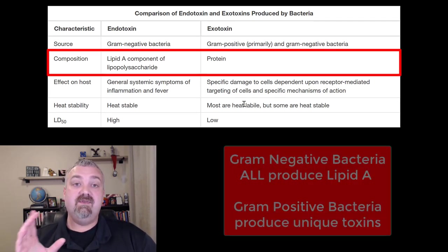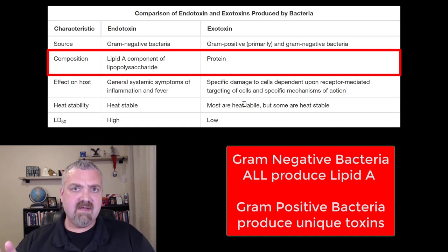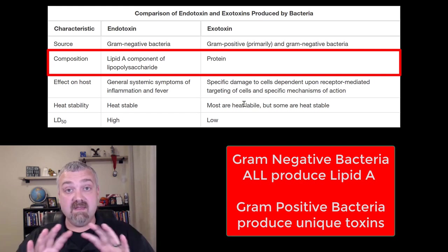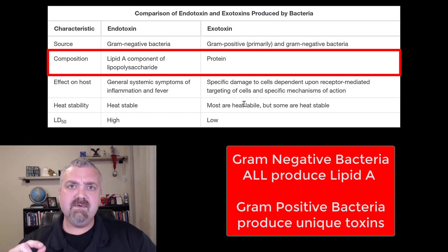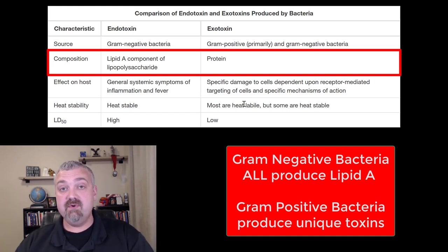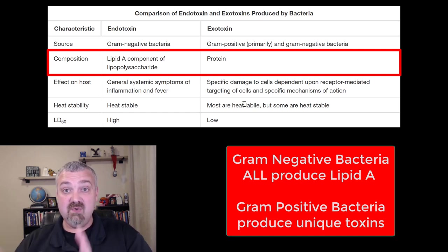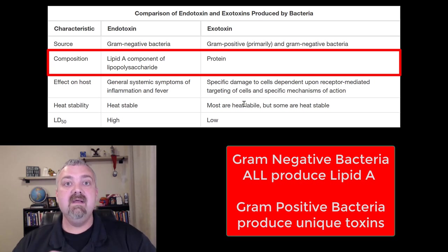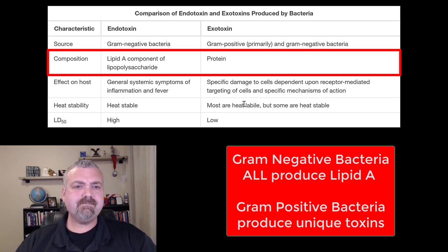In terms of composition, with gram-negative bacteria, every gram-negative bacteria produces the same endotoxin. It's called Lipid A, and it's part of that lipopolysaccharide membrane. Exotoxins are protein products, which means they are specific to each individual organism — each one has its own structure and its own function. So these are unique to different organisms, whereas all gram-negative bacteria make the same endotoxin.